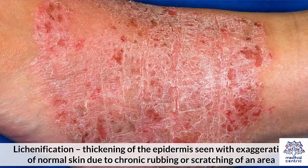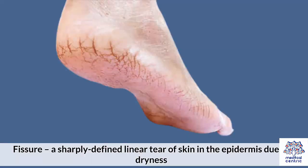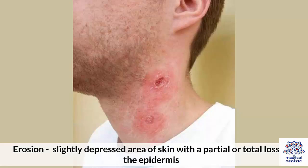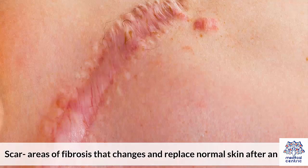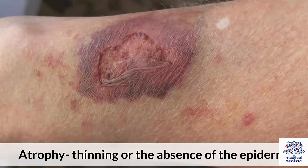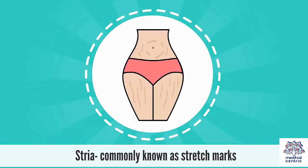Lichenification is thickening of the epidermis seen with exaggeration of normal skin due to chronic rubbing or scratching of an area. Fissure is a sharply defined linear tear of skin in the epidermis due to dryness. Erosion is slightly depressed areas of skin with partial or total loss of the epidermis. Ulcer is a defect in the skin with loss of epidermis and some part of the dermis. Scar are areas of fibrosis that change and replace normal skin after an injury. Atrophy is thinning or the absence of the epidermis. Striae are commonly known as stretch marks.